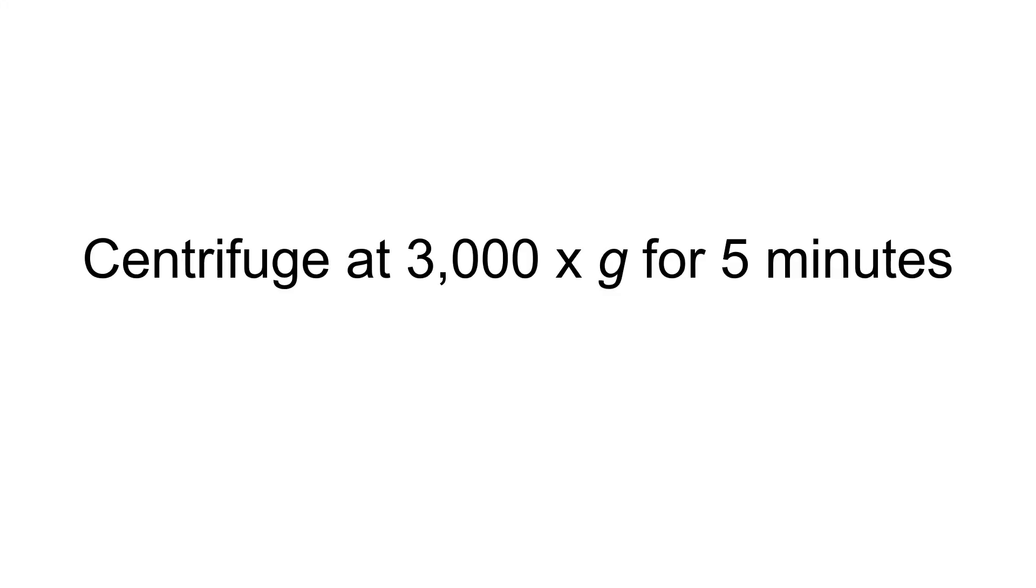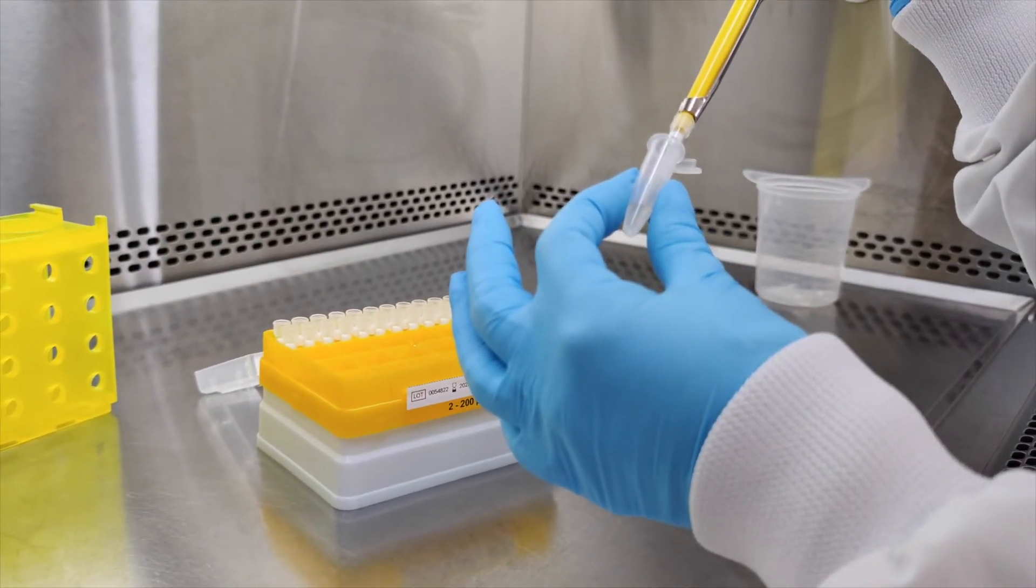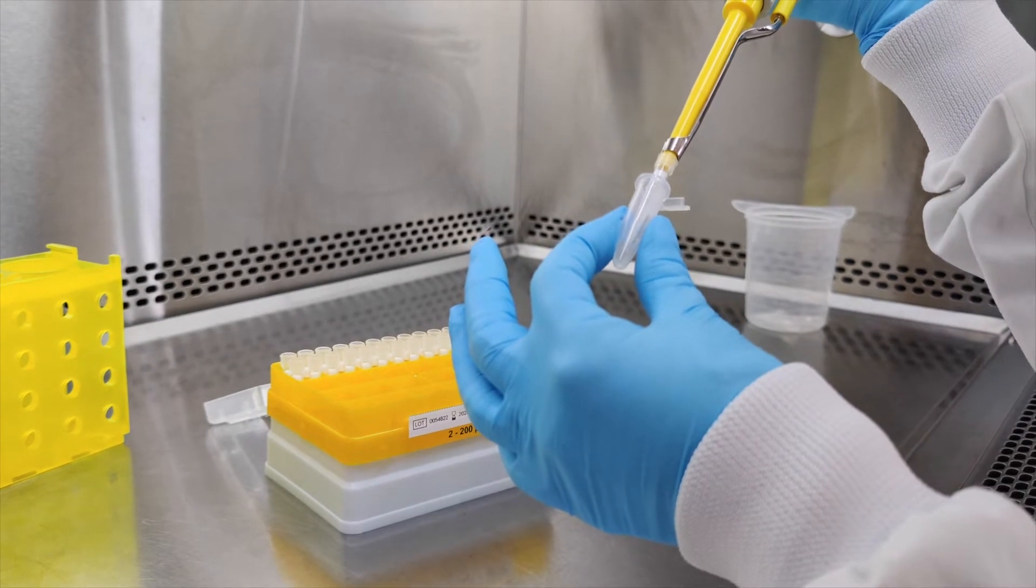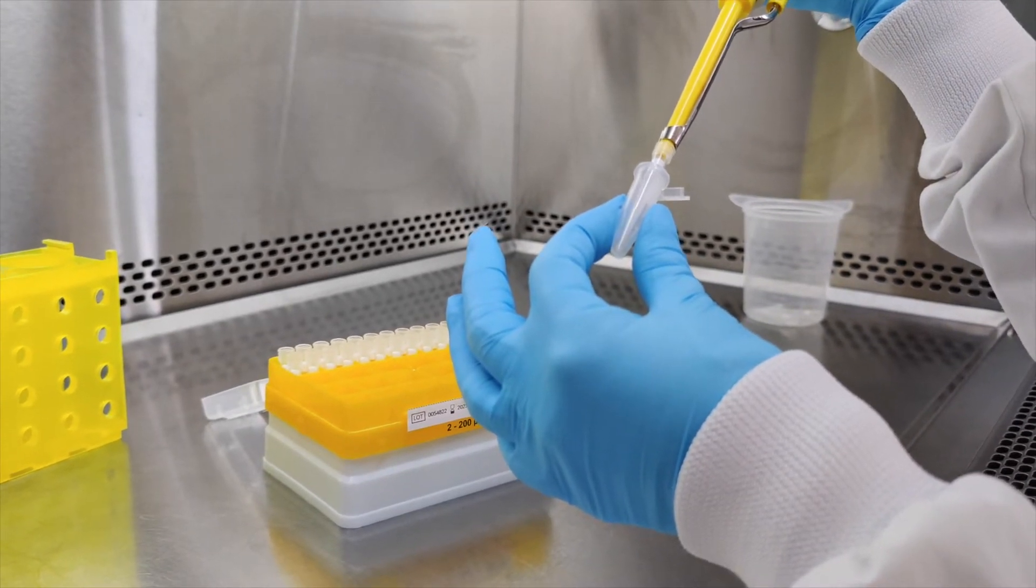Centrifuge pod suspension at 3000 g for 5 minutes. Being careful not to disturb the pods pellet, remove and discard the supernatant.